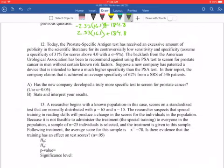So number 12, we start talking about using hypothesis statements. For this one, today the prostate-specific antigen test has received an excessive amount of publicity in the scientific literature for its controversial low sensitivity and specificity, assuming a specificity of 31 percent for scores above 4 with a standard deviation of 9 percent. The backlash from the American Urological Association has been to recommend against using the PSA test to screen for prostate cancer in men without certain known risk factors. Suppose a new company has patented a device that is intended to have a much higher specificity than the PSA test. In the report, the company claims that it has achieved an average specificity of 62 percent from an SRS of 546 patients. So what we want to do is has the new company developed a truly more specific test to screen for prostate cancer using an alpha level 0.05.